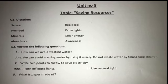Today we will do the question and answers. Question no. 1 is: how can we avoid wasting water? We can avoid wasting water by using it wisely. 'Wisely' means sensibly and intelligently — hum log paani ka istamal samajhdari se karke isse zaya hone se bacha sakte hain.